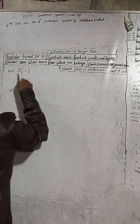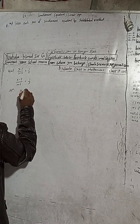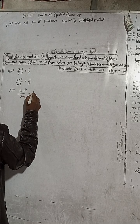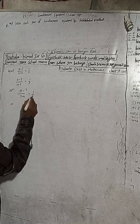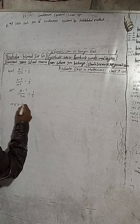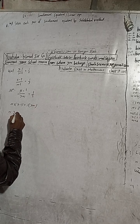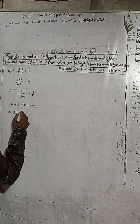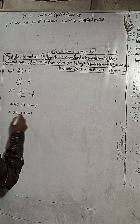This is question number 4m — solve this equation by substitution method. Here are the two pairs of simultaneous equations: x minus 1 by y plus 1 is equal to 1 by 2. Cross multiply this, so this will be x minus 1 into 2, and 1 into y plus 1. When we solve this: 2x minus 2 is equal to y plus 1.